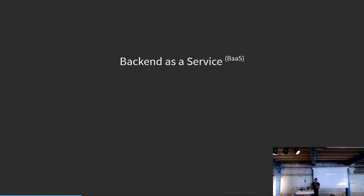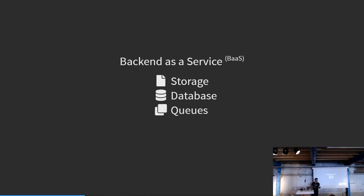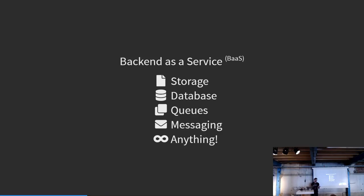Serverless basically consists of two parts. The first is Backend as a Service, called BaaS. This could be storage like S3 or Google Cloud Storage, or databases like DynamoDB from Amazon, queues, messaging — basically you can get anything. You can also have serverless search engines, or even managed ones.